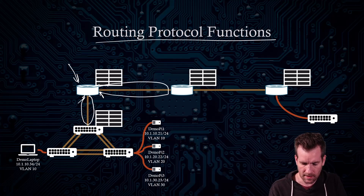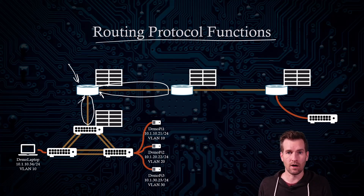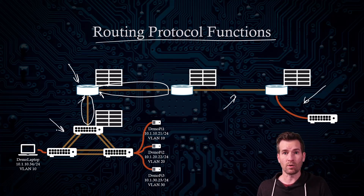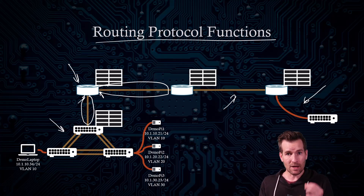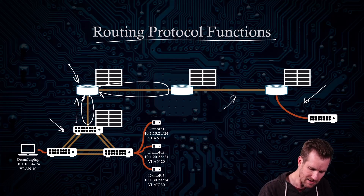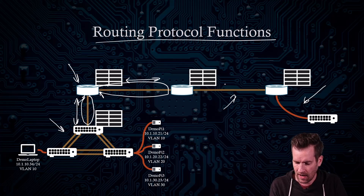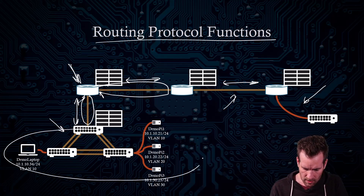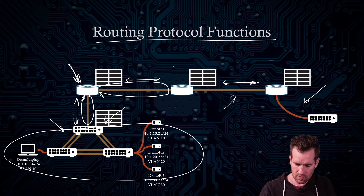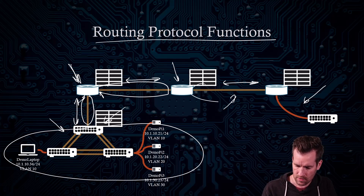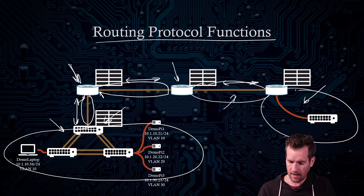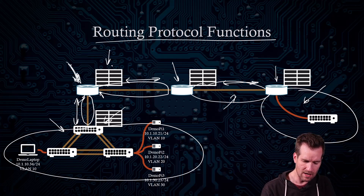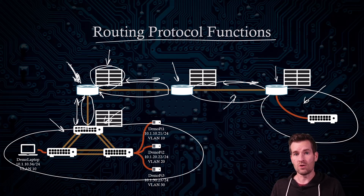It learns of this network because once we set up that interface, it understands it's part of that network. What it doesn't know about is these remote networks — and in this example, there are many remote networks it needs to learn. What a dynamic routing protocol does is allows all of these devices to speak together and transfer information back and forth, so that router one learns of all the directly connected networks the layer three switch has, the directly connected network that router two has, and the distant remote network attached to router three. All of that information goes into the routing table on R1, and now R1 knows where to direct traffic.